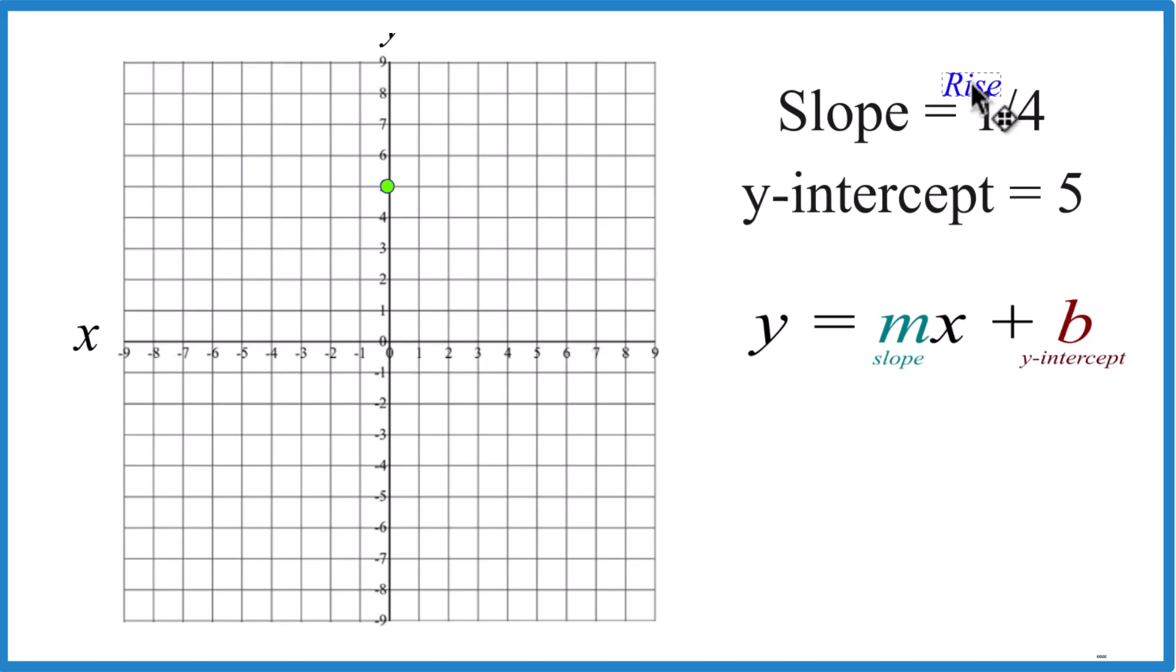The slope, that's 1/4. Let's think of that as rise over run. We'll rise 1, run 4.